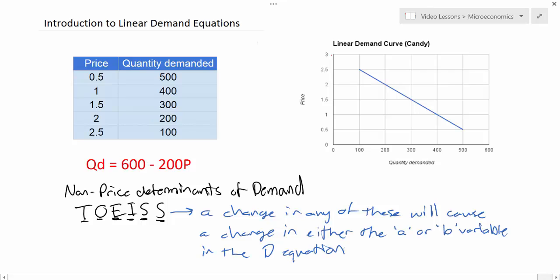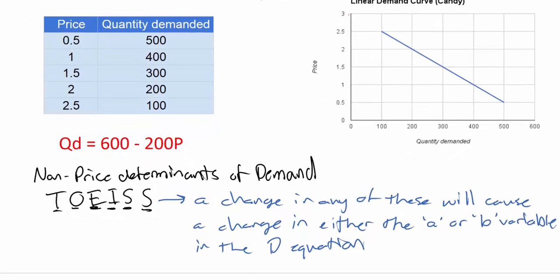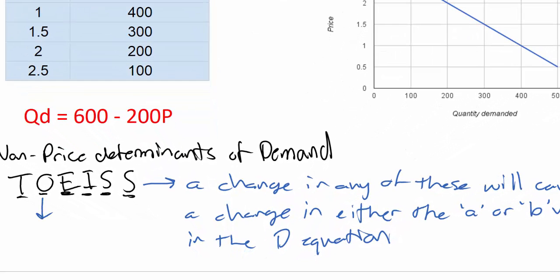For instance, let's go through one or two examples here. Let's assume that something causes the demand for candy to increase relating to the price of other related goods. For example, what if the price of ice cream decreases?